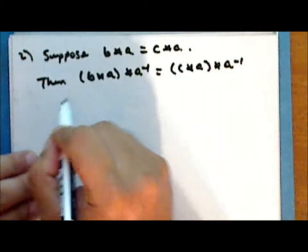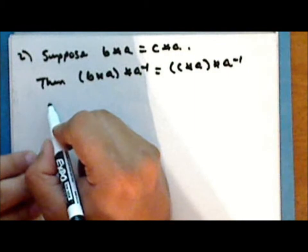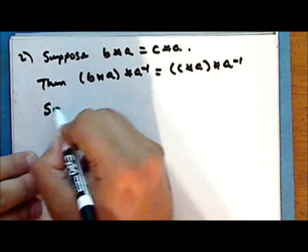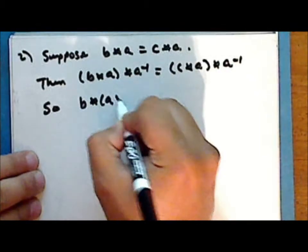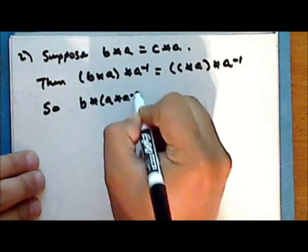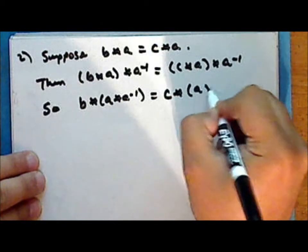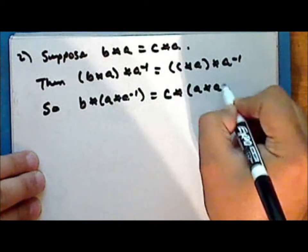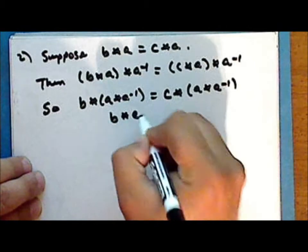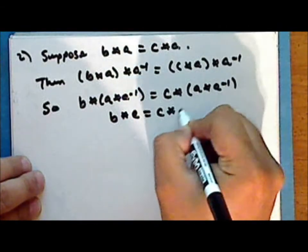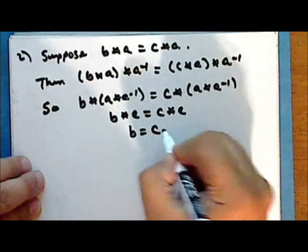And once again, as the operation star is associative over the entire underlying set G, we can regroup the terms so that B star (A star A-inverse) is equal to C star (A star A-inverse), so that B star identity is equal to C star identity, or simply B is equal to C.